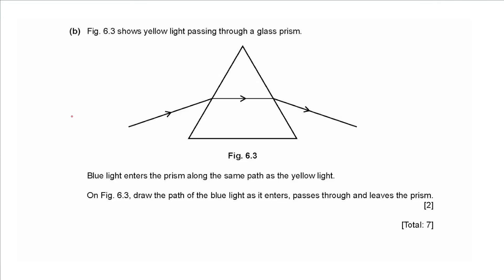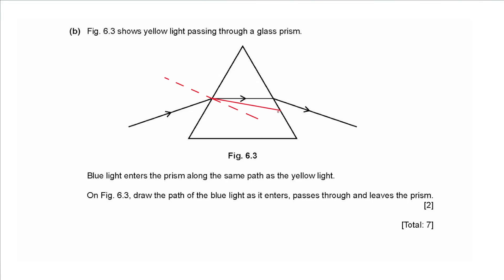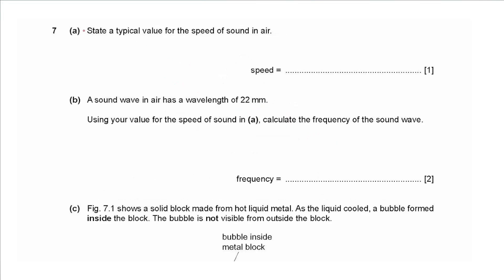Part b: figure 6.3 shows yellow light passing through a glass prism; blue light now enters along the same path. Draw the path of blue light as it enters, passes through, and leaves the prism. Blue light bends more than yellow. The normal is perpendicular to the surface; the ray must not cross the normal. Blue light bends towards the normal more than yellow at entry, and when it exits into air it bends with an even greater angle.